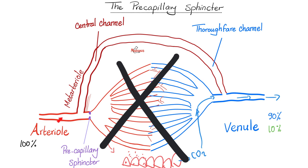There is the meta-arterial, which could be considered as this piece right here. And then there is the lovely channel — it has two names: in the beginning it's called the central channel, and near the end it's called the thoroughfare channel. It's the same continuous thing. For this shunting action to happen, you have to close the pre-capillary sphincter, which is part of your meta-arterial.